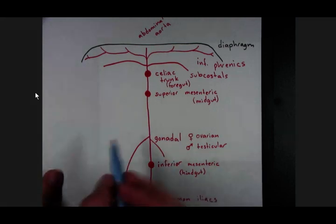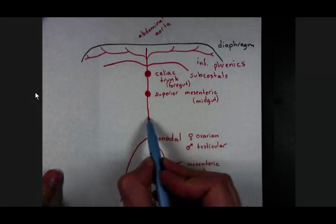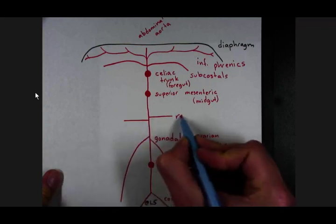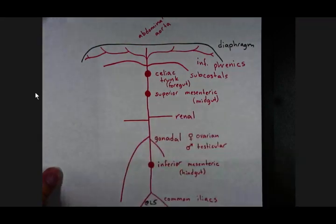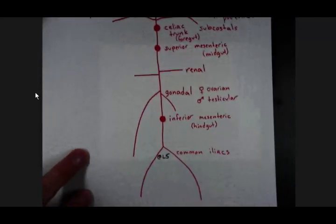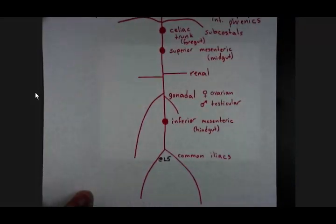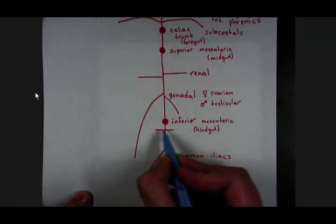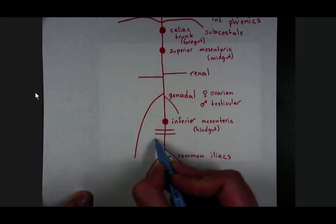And then superior to the gonadals, another paired set of arteries are the renal arteries. And then let's actually go back down below the inferior mesenteric, and let's put in the lumbar arteries. There are four paired lumbar arteries.